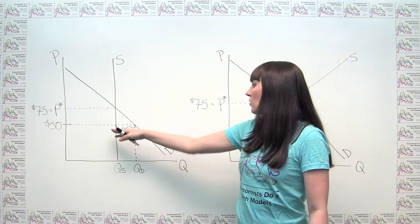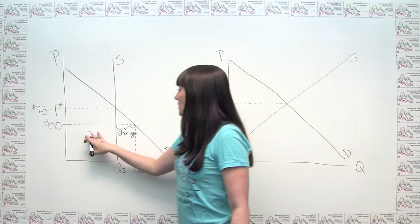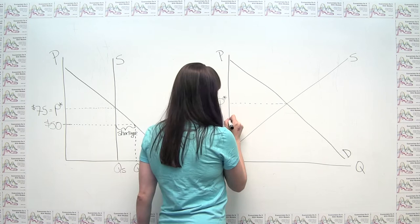And we could say that the quantity supplied, of course, is at this level here, but the quantity demanded is out here. And we get what we call in economics, a shortage. So this shortage represents the people who go online to Ticketmaster or whatever, and they're willing to pay what the tickets cost, but they put in their information and they get the little capture thing and they type it in. And they're like, sorry, there are no more tickets available for this event.